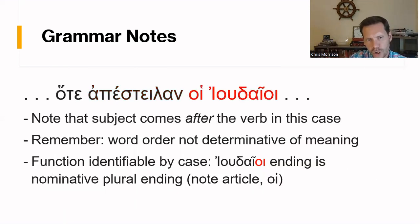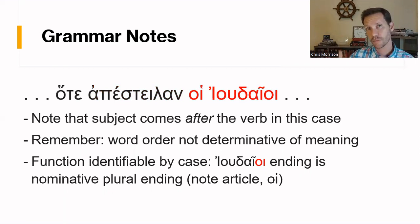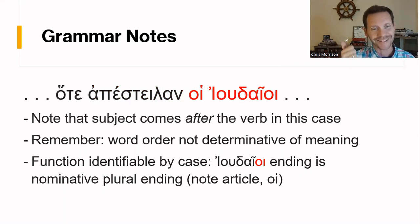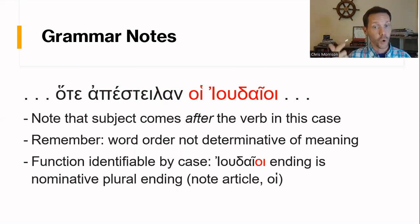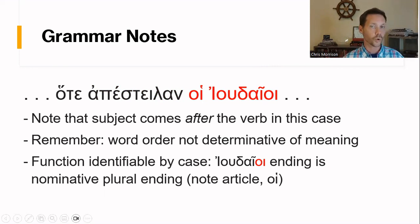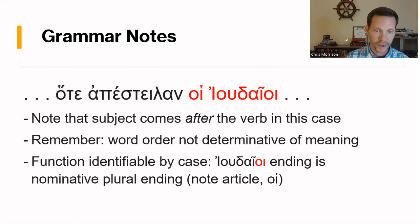Now, who sent? The subject is hoi Ioudaioi. Notice that the subject comes after the verb — again, we don't do that in English, but many languages place the subject after the verb. The subject can go anywhere in the sentence. How do we know this is the subject? First, it's a noun, but also the case: hoi is a nominative plural article, and Ioudaioi is nominative plural. Since it's nominative, that makes it the subject of the verb. So: 'the Jews sent.' We know it's nominative plural because of the hoi ending.